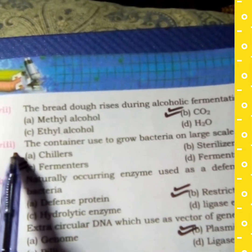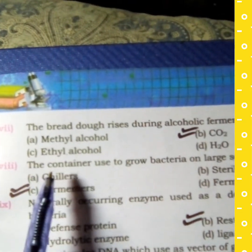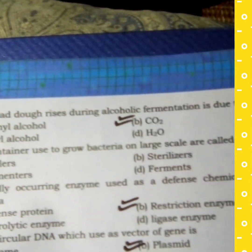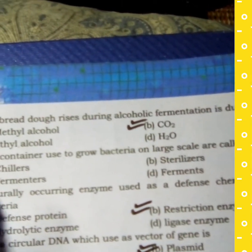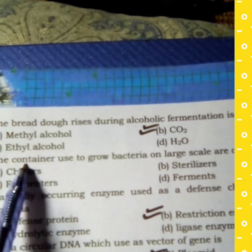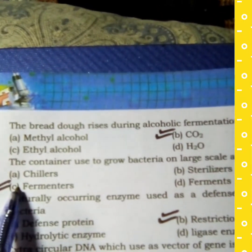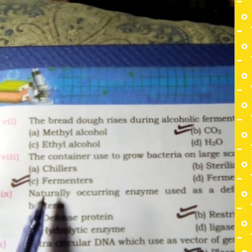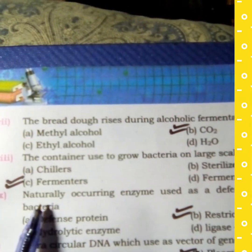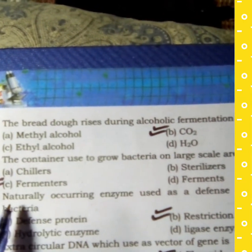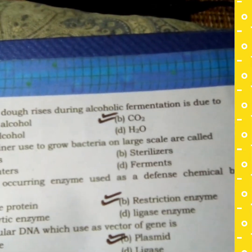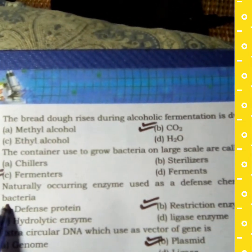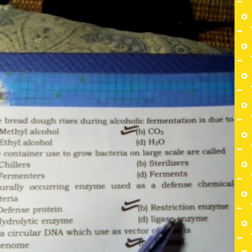MCQ number 8: The containers used to grow bacteria on a large scale are called — option C, Fermenters, is the correct answer. MCQ number 9: Naturally occurring enzymes used as a defense chemical by bacteria — the correct answer is option B, Restriction Enzymes.